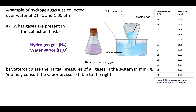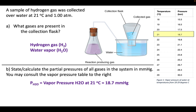Part A is to recognize that we have hydrogen and we have water vapor. Now we want to state the partial pressures of all the gases in the system, keeping in mind that we have a vapor pressure table. We know that we're at 21 degrees Celsius and 1 atmosphere. The vapor pressure of water at 21°C is going to be equal to 18.7 millimeters mercury, or Torr — remember those are two names for the same unit. In a closed system, the partial pressure of water collected over water is going to equal its vapor pressure. It depends only on temperature, and at 21°C it's 18.7 mmHg.